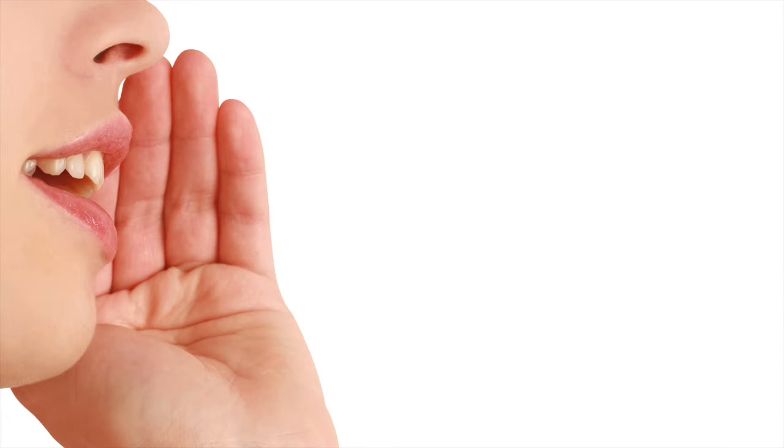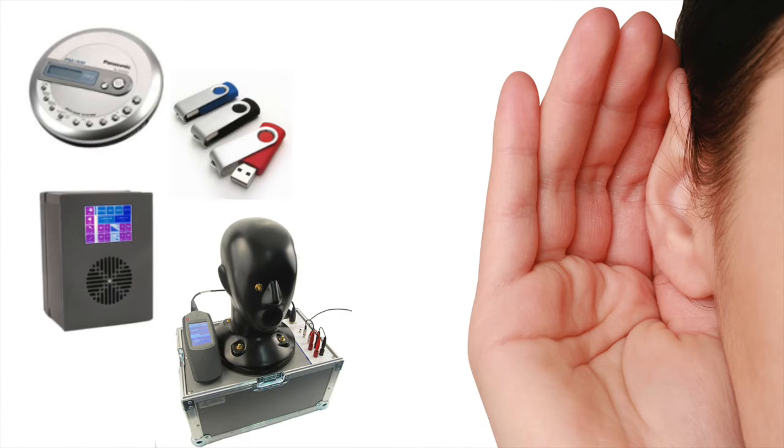In real human speech communication, there is at least one person talking and one person listening. To do a STIPER measurement, you need two devices: a source of the STIPER test signal to replace the talker and a STIPER analyzer to replace the listener.